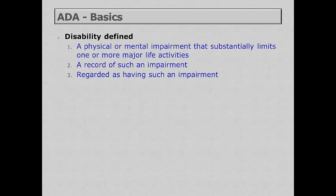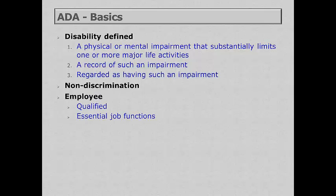The crux of the ADA is the definition of a disability, defined as a physical or mental impairment that substantially limits one or more major life activities — having a record of such an impairment, or even just being regarded as having an impairment. The ADA is focused on non-discrimination; it is not affirmative action. An employee must be qualified and able to perform the essential job functions, and if so, they are eligible for reasonable accommodations.